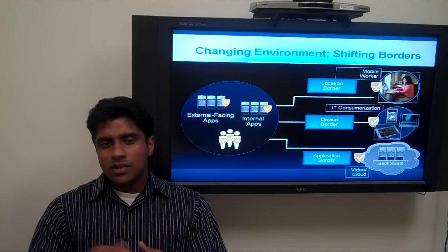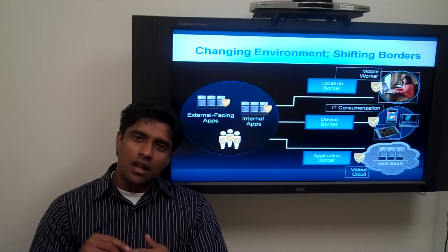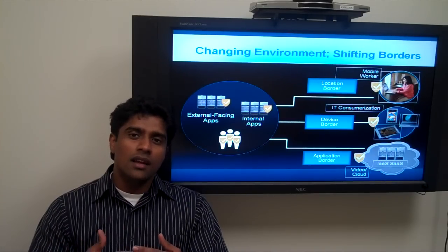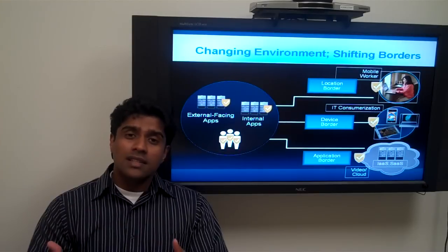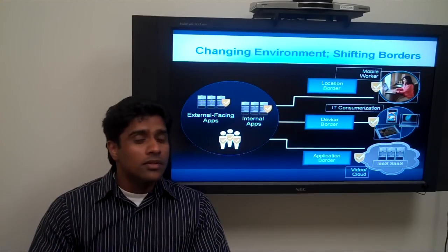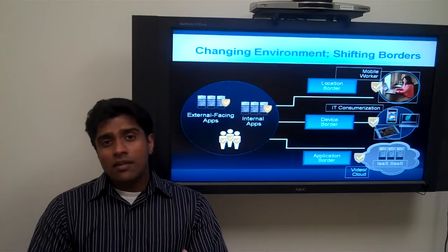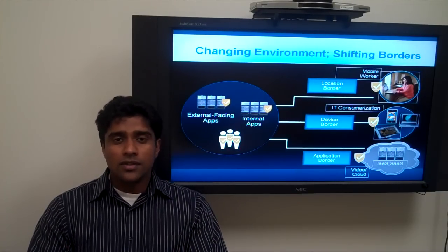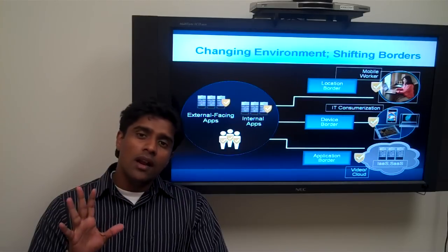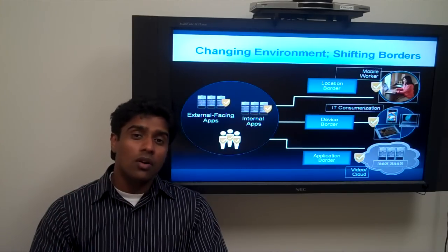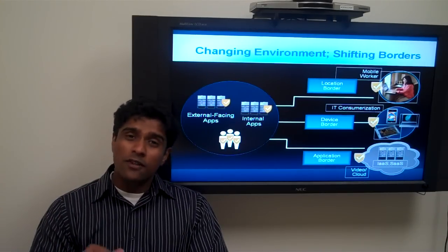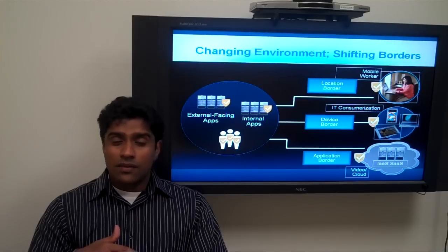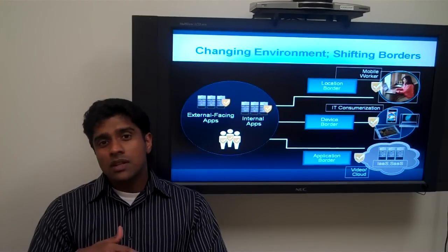Let's talk about each one of these in a little more detail. Location borders — this is probably the most mature of all three we are talking about today. One of the things that has happened is broadband penetration. In addition to software VPN inside Cisco, we also have a Cisco Virtual Office solution where we provide a hardware VPN solution to our home users.